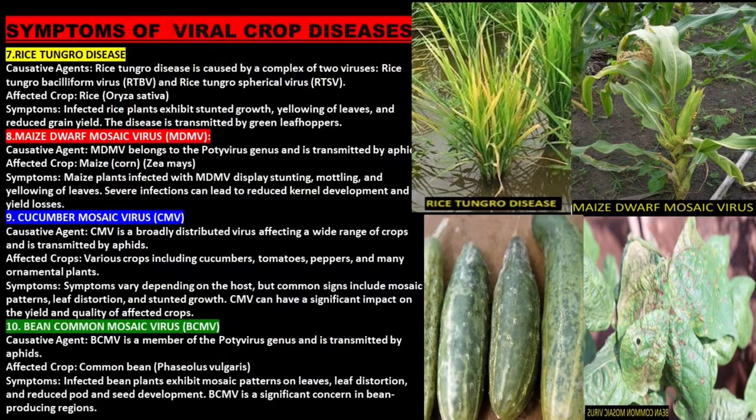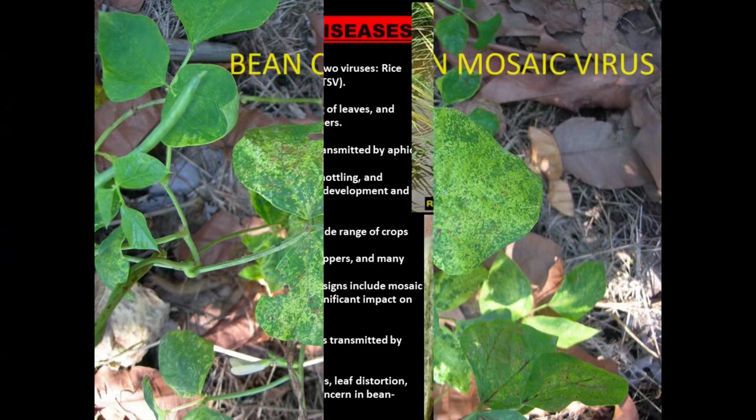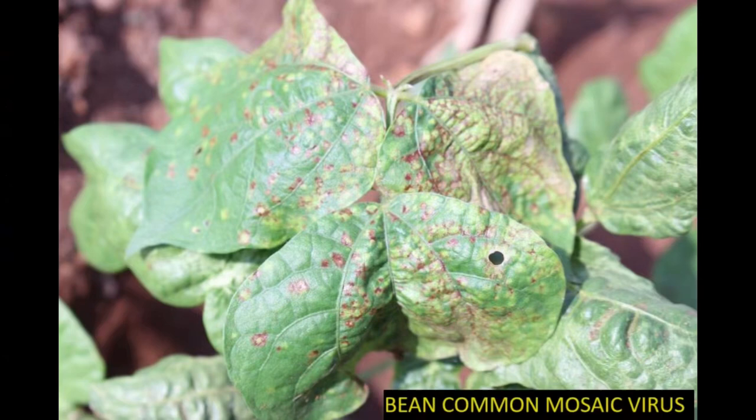Bean Common Mosaic Virus is a member of the potyvirus genus and is transmitted by aphids. Infected bean plants exhibit mosaic patterns on leaves, leaf distortion, and reduced pod and seed development.